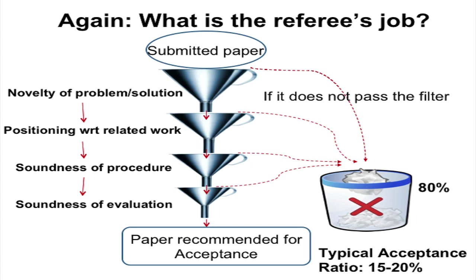The typical acceptance ratio for any good or decent conference will be around 15 to 20 percent. We have to put in the effort to make it into this 15 to 20 percent, and that is what this workshop is all about — taking your idea and working with you to get you to this 15 to 20 percent, rather than having your effort wasted by taking one of these exits.